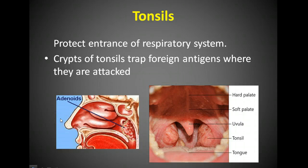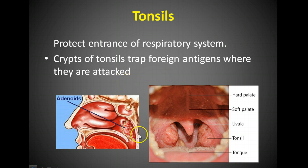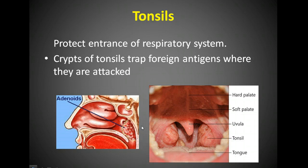We ended the last screencast talking about tonsils, so this is part two of the lymph system. We talked about how the tonsils are located in areas where you're likely to bring in microorganisms through the mouth and through the nose, how the pharyngeal tonsils when they're inflamed are called adenoids and how they can be taken out. It is said that if you have your tonsils taken out you may be more prone to sore throats, but if they're constantly infected then they almost need to be taken out.